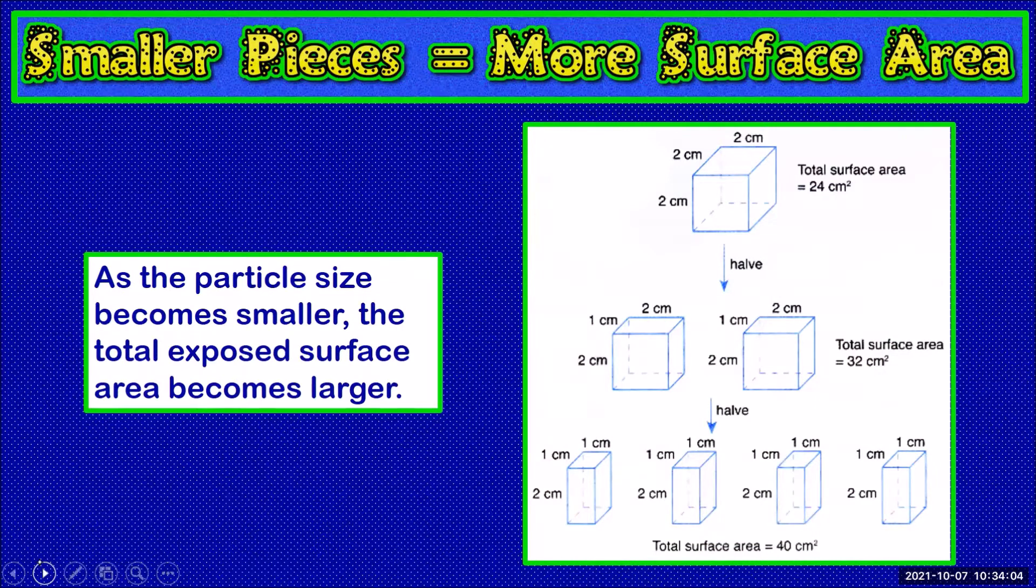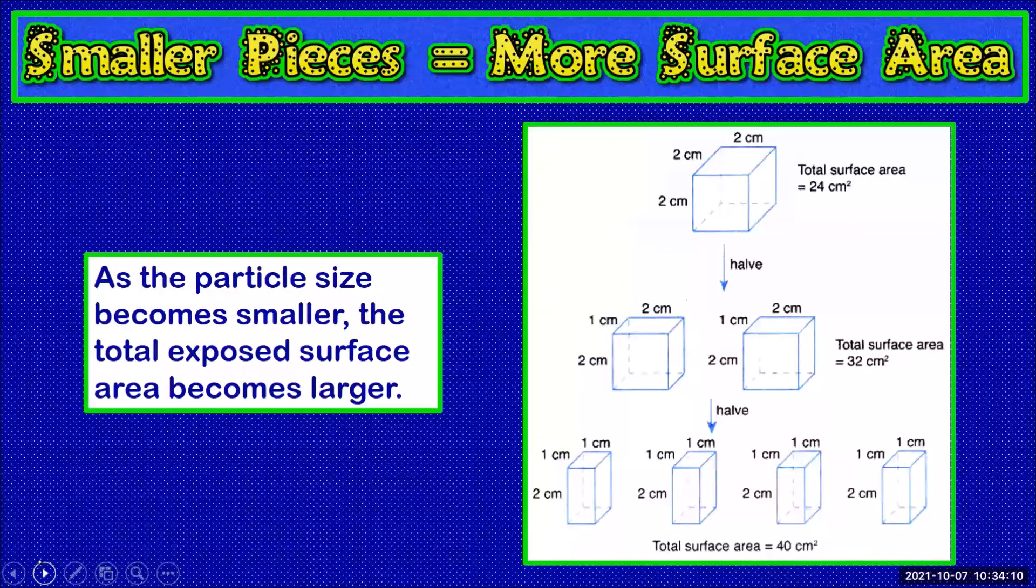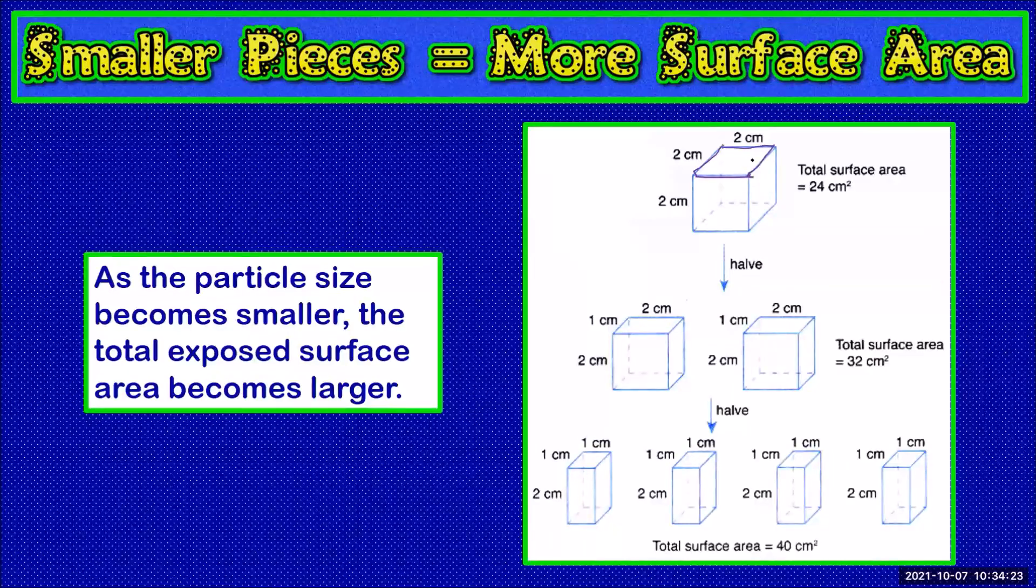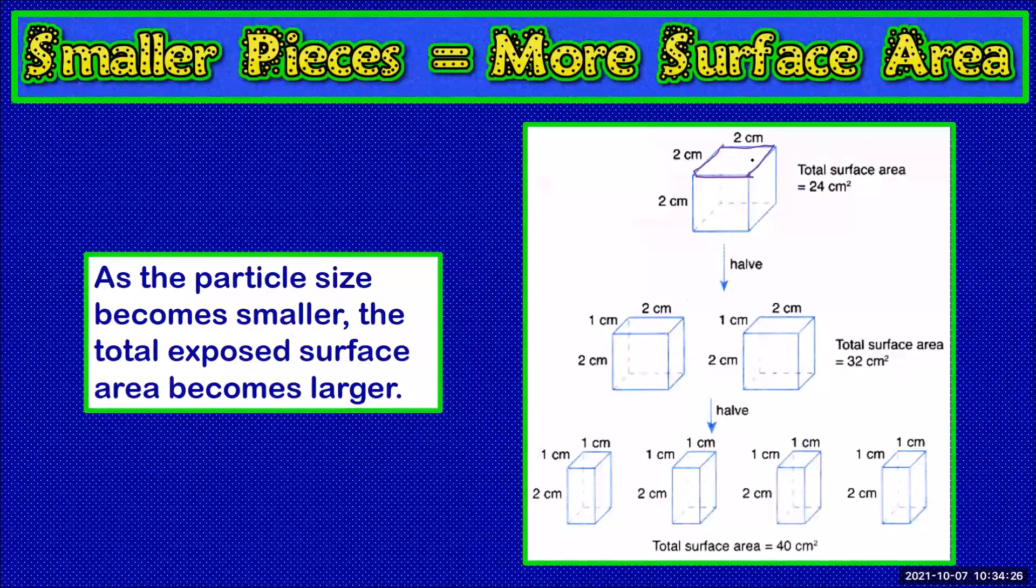As the particle size becomes smaller the total exposed surface area becomes larger. If we take a 2 cm x 2 cm x 2 cm block it has 6 faces each 2 cm x 2 cm so the total surface area is 24 cm squared.